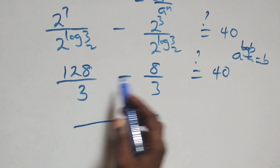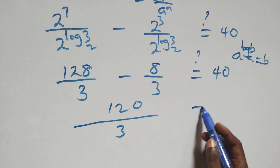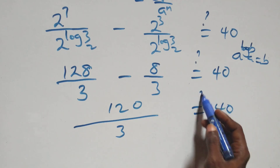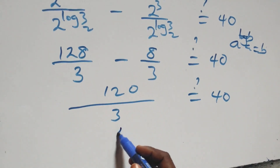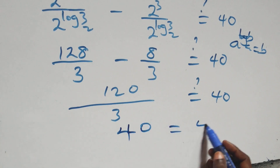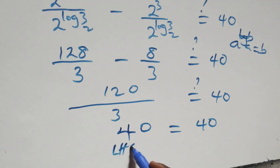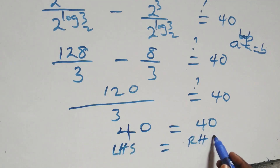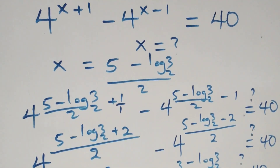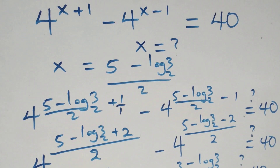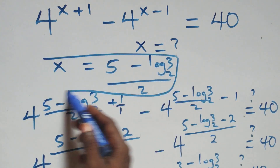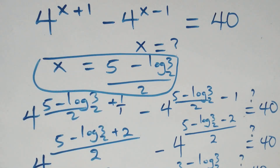We get 128 over 3 minus 8 over 3, which gives 120 over 3, and 120 divided by 3 equals 40. The left-hand side equals the right-hand side, so we conclude that x equals (5 minus log 3 base 2) all over 2 satisfies the given equation. Thank you for watching — don't forget to subscribe for more videos, turn on the notification bell, share this video, give a thumbs up, and leave a comment. See you next time, bye for now.